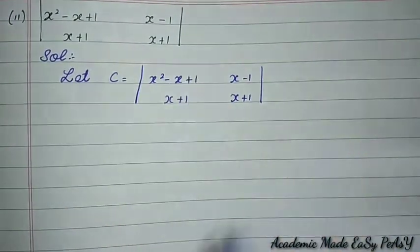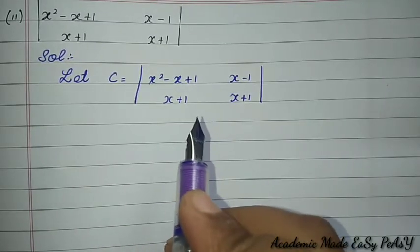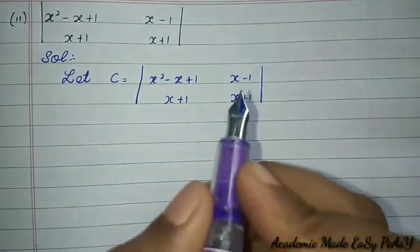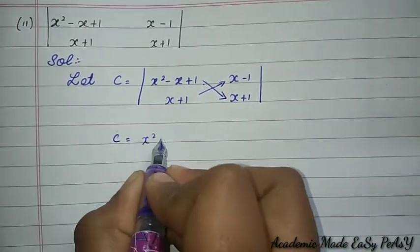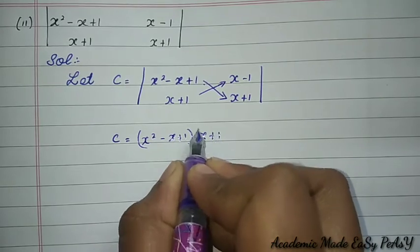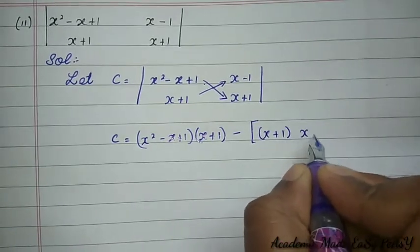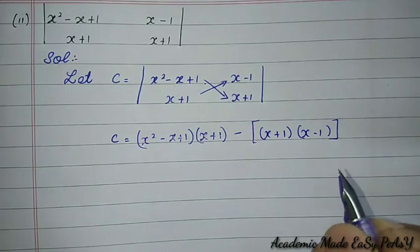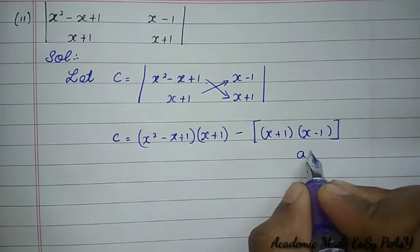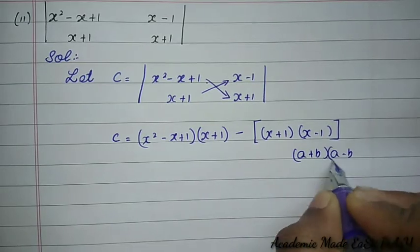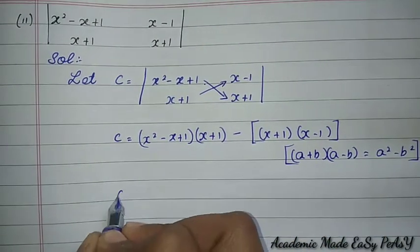Subdivision 2: let the determinant be C. Using the x method, C = (x² − x + 1)(x + 1) − (x + 1)(x − 1). Notice that (x + 1)(x − 1) is of the form (A + B)(A − B) = A² − B², so we can use that property to simplify.